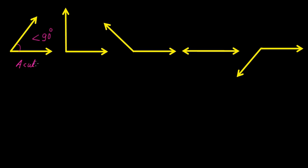Acute angle. In the second diagram, you can see that the measure of this angle is exactly 90 degree, so this is exactly 90 degree. When an angle whose measure is 90 degree, such type of angle is known as the right angle.